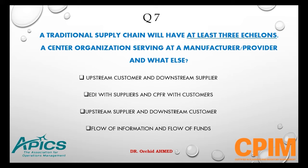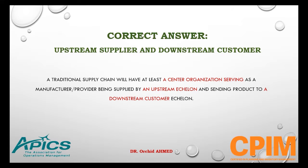Question number 7. A traditional supply chain will have at least three echelons — a central organization serving as a manufacturer or provider, and what else? The right answer is upstream supplier and downstream customer. Any traditional supply chain will have a central organization being supplied by an upstream echelon and sending product to a downstream customer echelon.